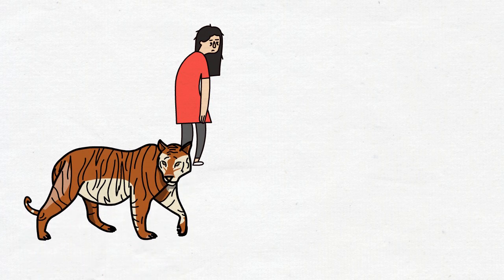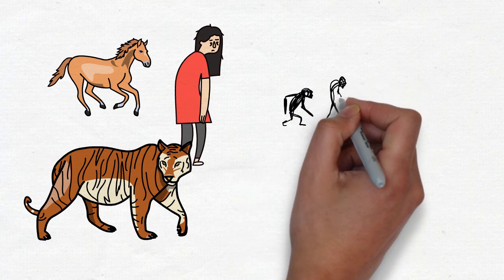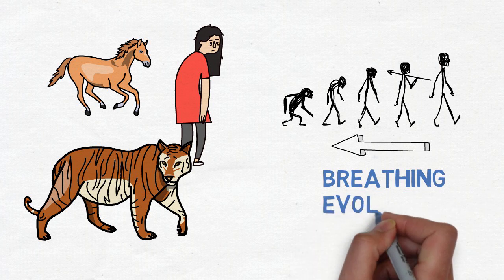James Nestor. Want to hear a crazy fact? Humans are the worst species of mammals on the entire planet when it comes to breathing. As humans have evolved in so many ways, we've actually gone backwards when it comes to breathing. This disevolution has led to misaligned jaws, overbites, underbites, and snaggled teeth.